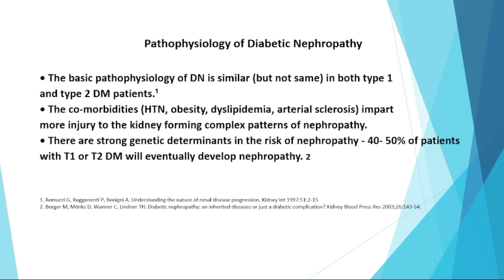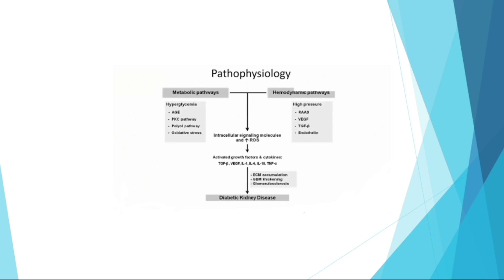The pathophysiology of diabetic nephropathy is similar but not identical in type 1 and type 2 diabetes patients. Comorbidities such as hypertension, obesity, dyslipidemia, and arteriosclerosis cause further injury to the kidney, forming a complex pattern of nephropathy. There are strong genetic determinants in the risk of nephropathy — about 40 to 50% of patients with type 1 or type 2 diabetes will eventually develop nephropathy.